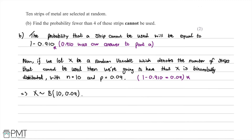We want P(X < 4), which is equivalent to P(X ≤ 3). Using either a calculator or binomial tables, this comes out as 0.99. There were two marks: one for correctly identifying the binomial distribution, and one for arriving at the correct answer of 0.99.